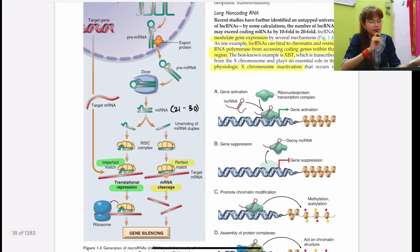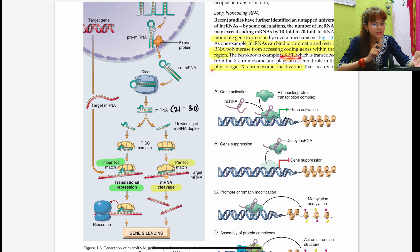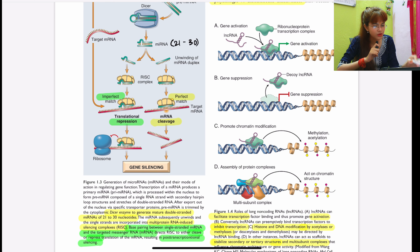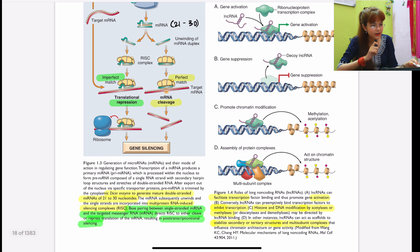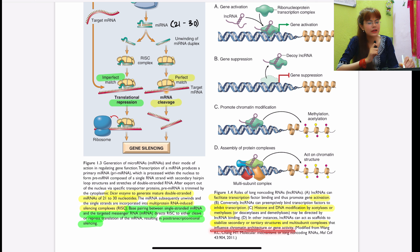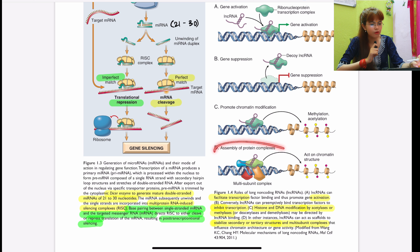Long non-coding RNAs, which are more than 200 nucleotides in length, also modulate gene expression. They can cause gene activation, gene suppression, histone and DNA modification through methylation and acetylation, and they act as scaffolds to stabilize secondary or tertiary structures and multi-subunit complexes of chromosomes. These are the four main actions of long non-coding RNAs.